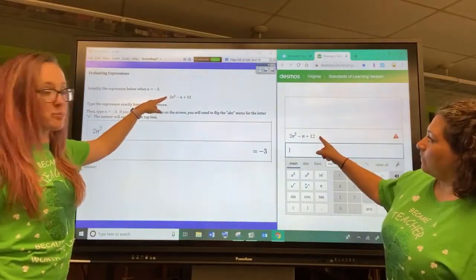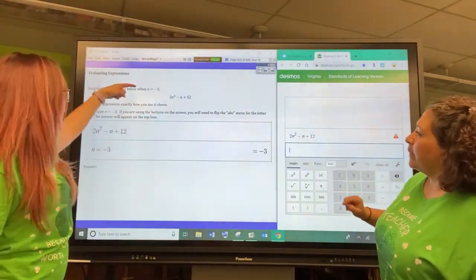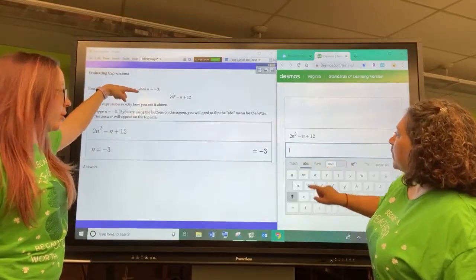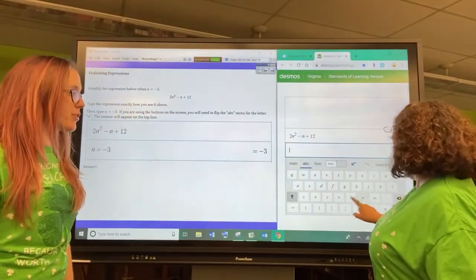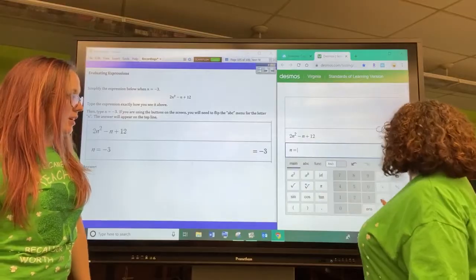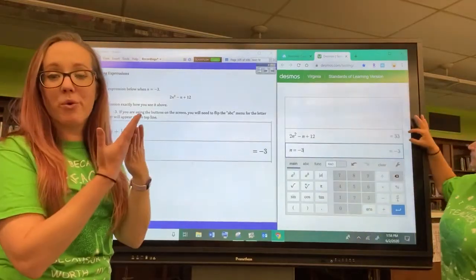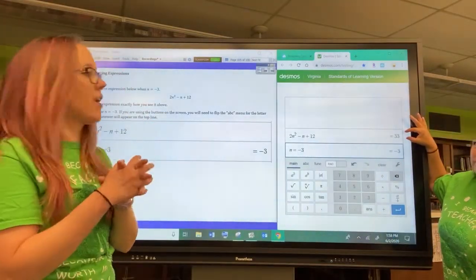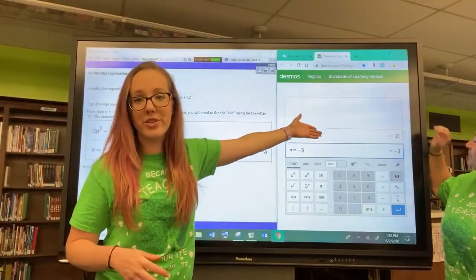There is a super easy way to type this in the calculator and it will do the work for you. So you type in the expression and then you type in the variable that you know, which is N equals negative three. And then it will plug it in for you and do the order of operations. And your answer is 33.